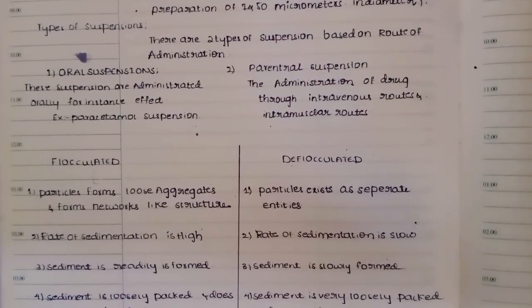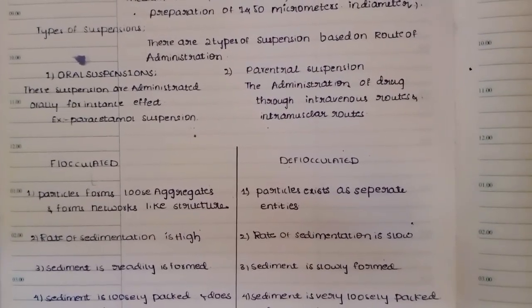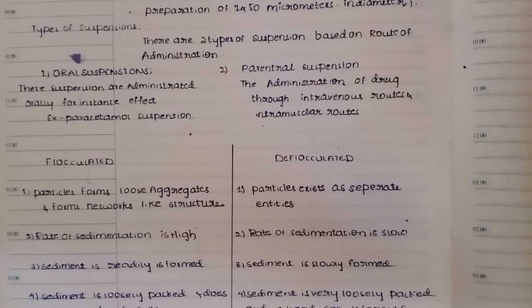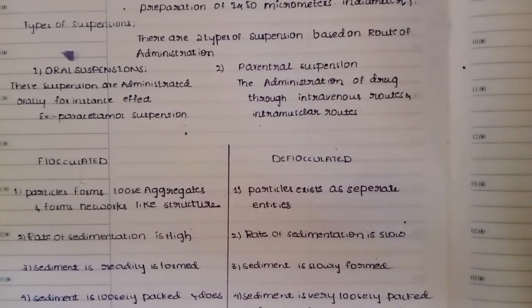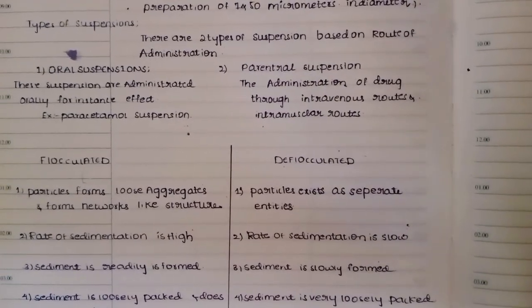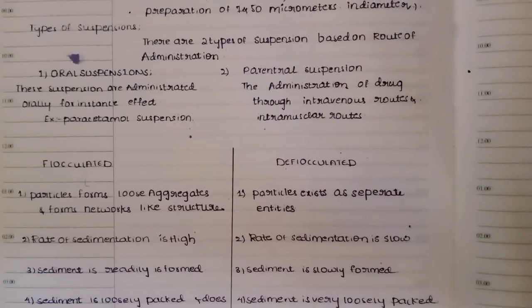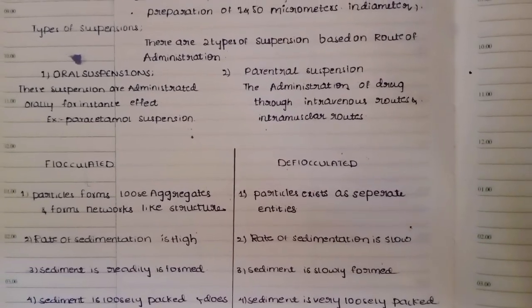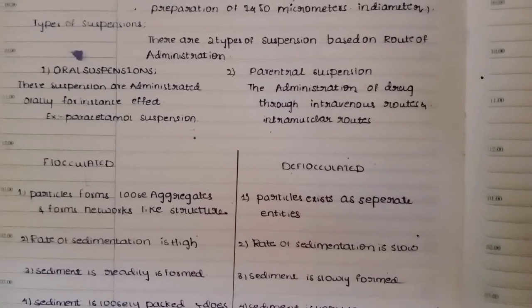Example of oral suspension is paracetamol suspension. Generally, we only know paracetamol tablets, but there is a paracetamol suspension. Parenteral suspension involves the administration of drug through intravenous and intramuscular routes.